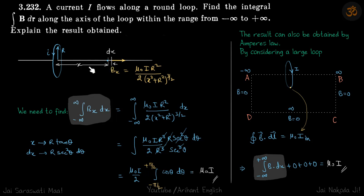At a general point x, if we take a small element dx, then we need to find Bx dot dx and then we need to integrate it for the whole axis.